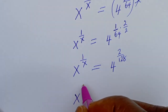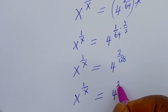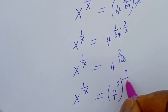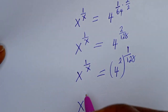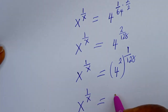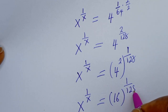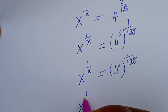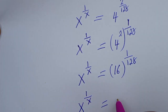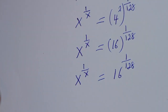This gives s to the power of 1 over s, and then s to the power of 1 over s is equal to 16 to the power of 1 over 128. Therefore the left hand side is s to the power of 1 over s, and the right hand side is 16 to the power of 1 over 128.